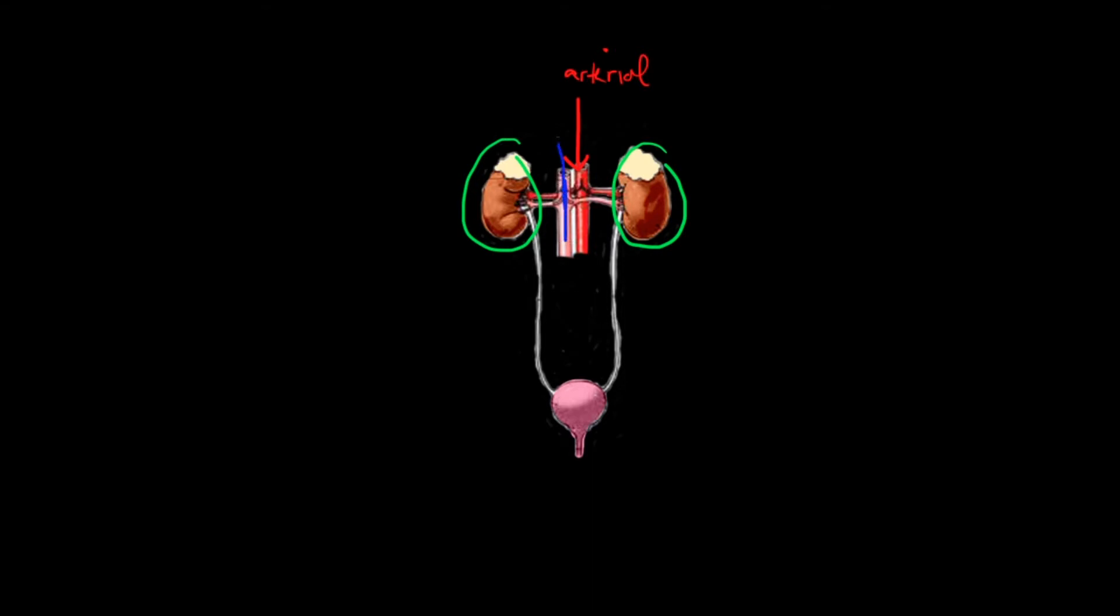This is your venous blood flow. Right below it are your ureters, very important. I'll write ureter. And then right below it is your lovely bladder. Isn't the human body just amazing?